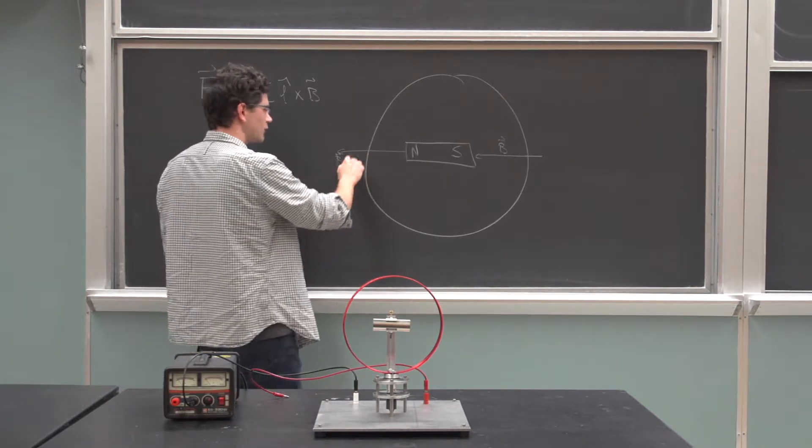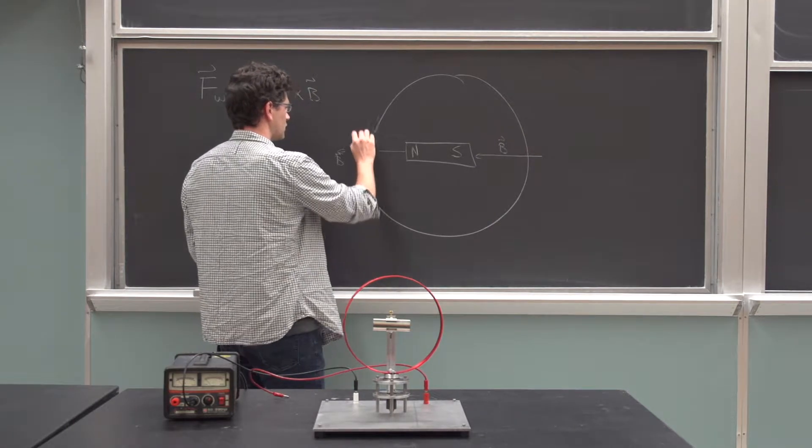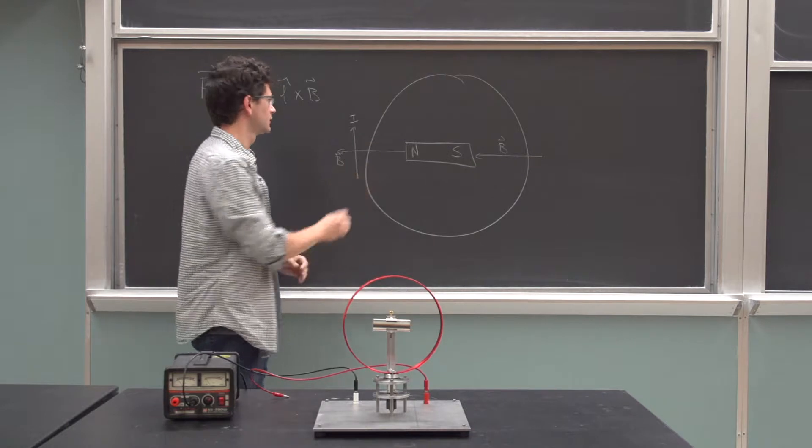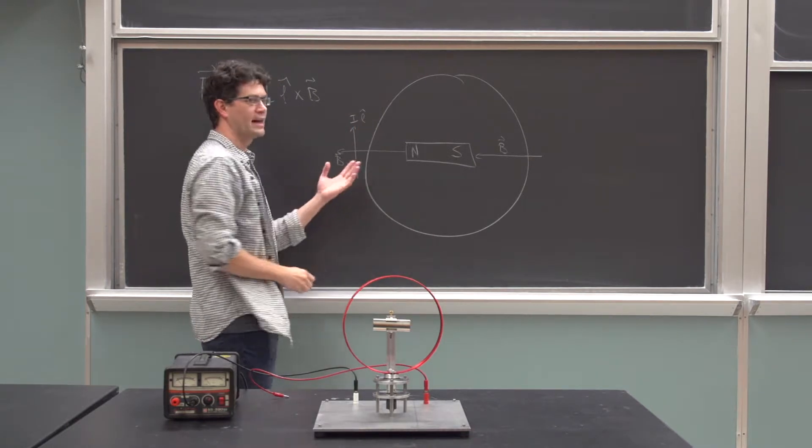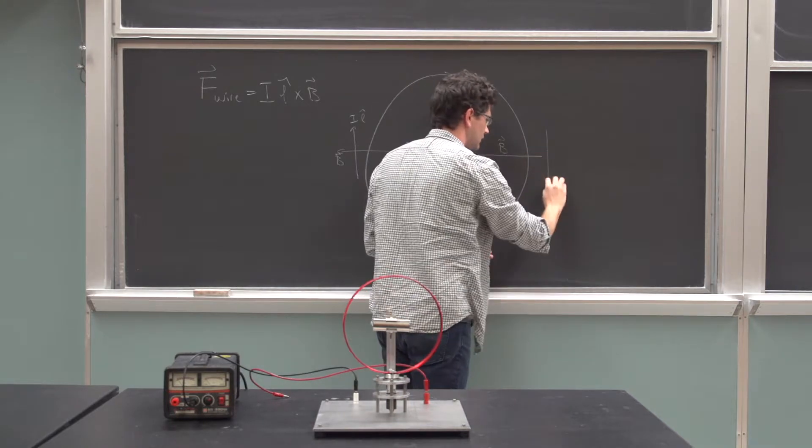I determined that already before. I think for this particular setup, the current is going upward on this side, that's going to be in the direction of my L hat, and then it wraps around, and then on this side, it's going to be down.